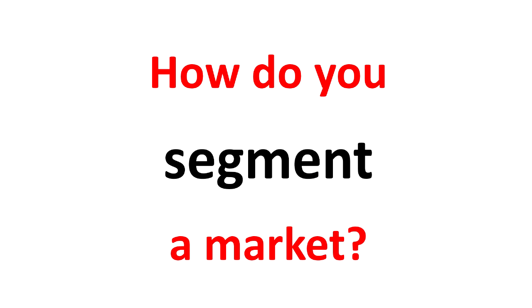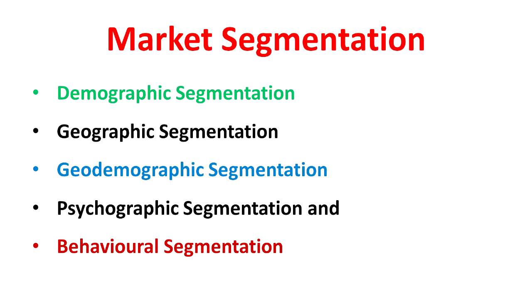Thus, market segmentation will help you understand the different sets of customers available in the market. How do you segment a market? The basis of market segmentation has gone a long way through different stages. It started with demographic segmentation as the data was easily available. Then it moved on to geographic segmentation, geodemographic segmentation, psychographic segmentation, and behavioral segmentation. So there are five ways to segment the market: demographic, geographic, geodemographic, psychographic, and behavioral segmentation. Thanks for watching the video.